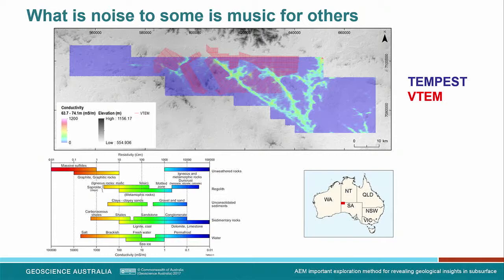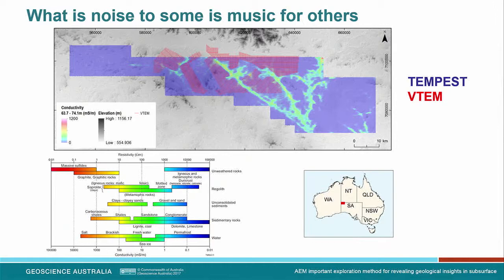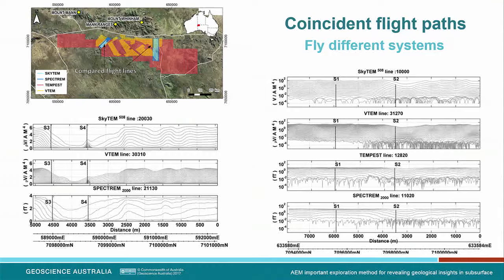What I'd like to talk about today is AEM and how it can be used. It's quite flexible — it can be reprocessed and reinterpreted. Data sets that might have been originally acquired for mineral exploration can then be reprocessed for groundwater or environmental studies and vice versa. As we say: what is music for some is noise for others. What you have there is an old Tempest survey. In the blue, it's a conductivity slice at a certain depth, and you can see how that dendritic pattern is mapping the paleochannels in the area. In the red, there was a VTEM survey targeting just the exposed rock or areas with shallow cover, tailored for mineral exploration.